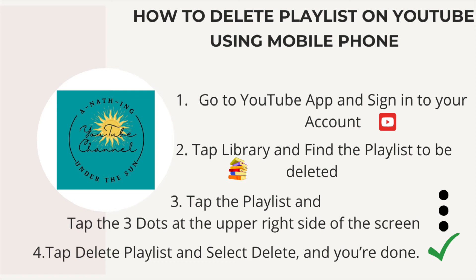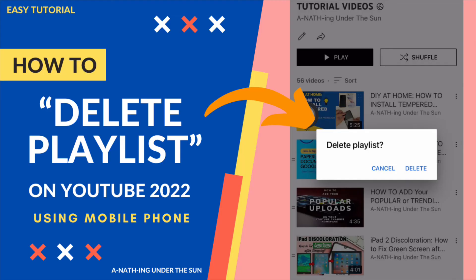First step: go to the YouTube app and sign in to your account. Second: tap Library and find the playlist you want to be deleted. Number three: tap the playlist and tap the three dots at the upper right side of the screen. Step four: tap Delete Playlist, select Delete, and you're done.